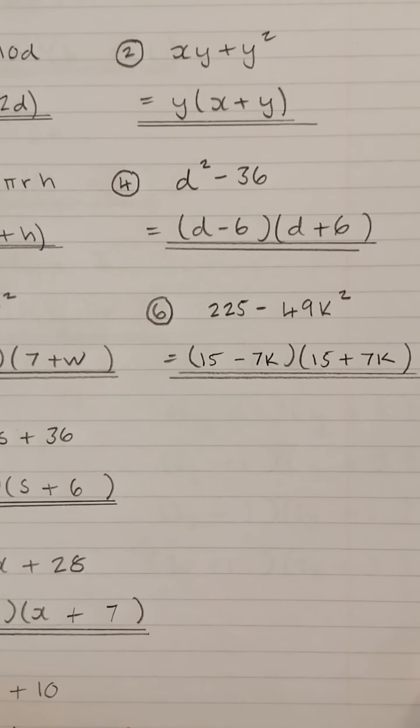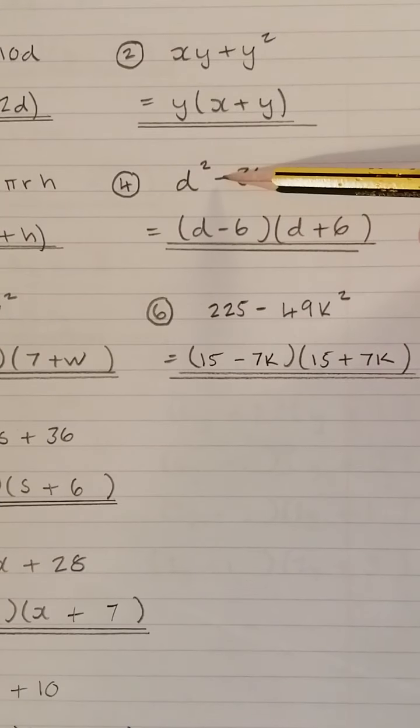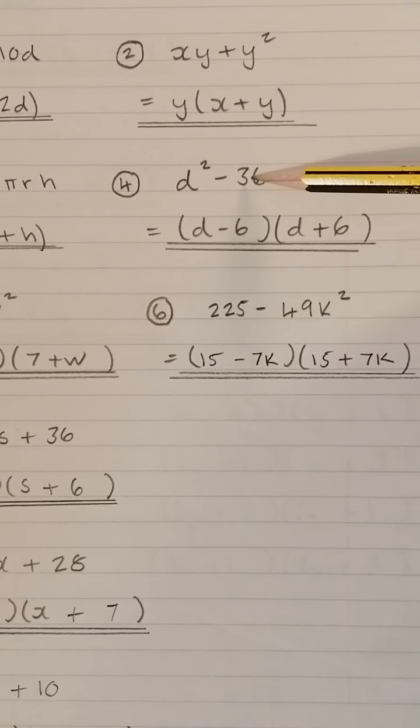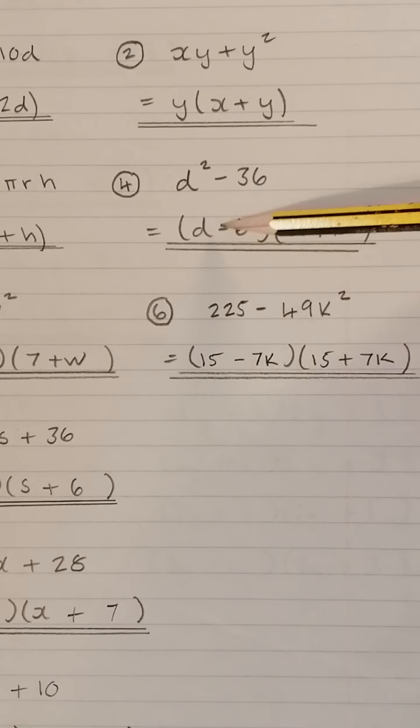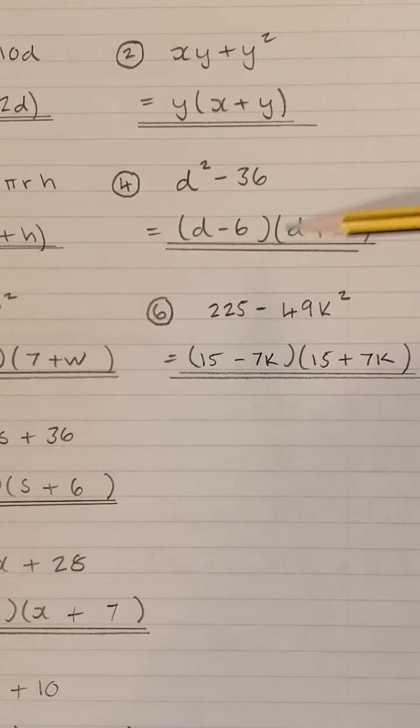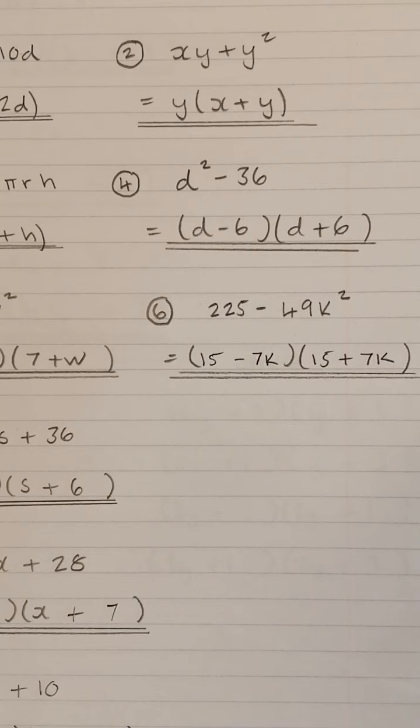Number 4 is what we call a difference of squares. Difference, take away. That's D squared and that is 6 squared. So the answer to this one is (D - 6) times (D + 6). D times D gives D squared, D times +6 gives +6D, -6D, the Ds cancel out, and -6 times +6 gives -36. It's sometimes worth multiplying out your answer to make sure you get the question. Then you can be reasonably sure you factorised it.